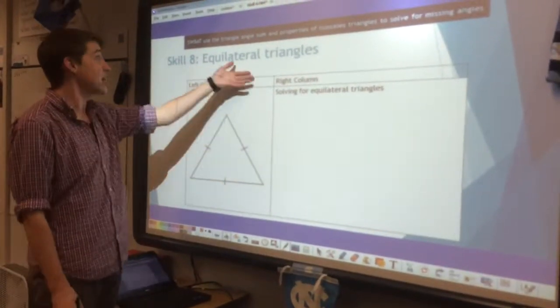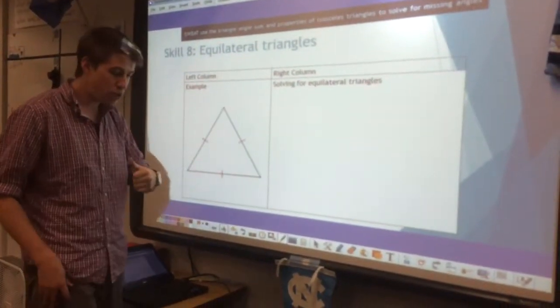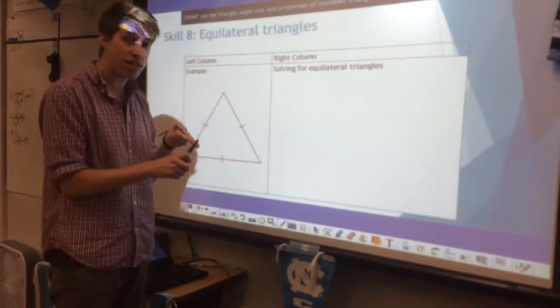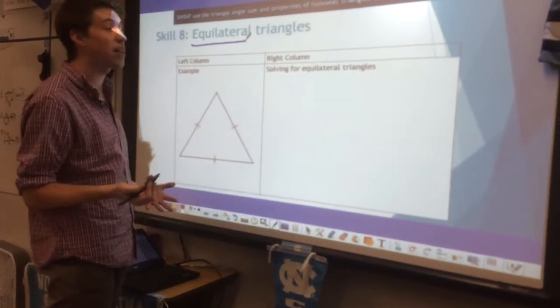All right, so skill 8 is equilateral triangles. We've talked about general triangles because every triangle adds to 180. We've talked about isosceles. This is another special type of triangle, equilateral.